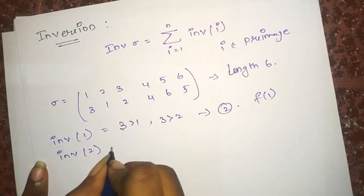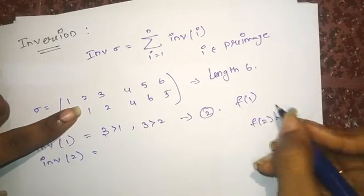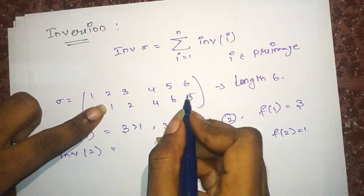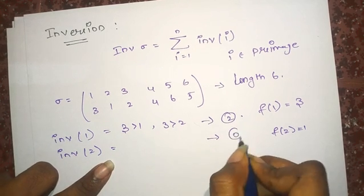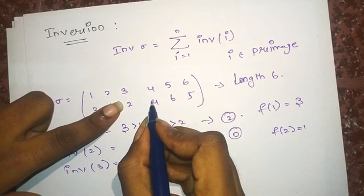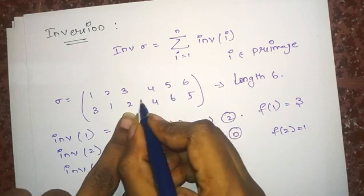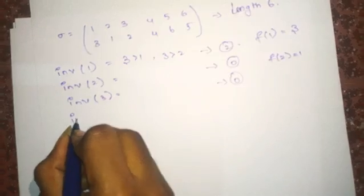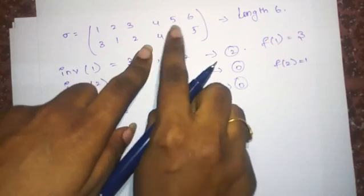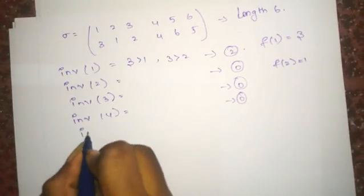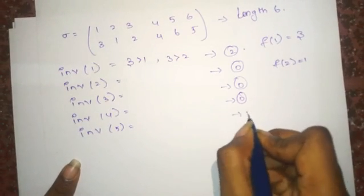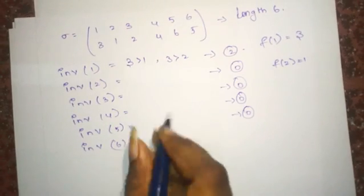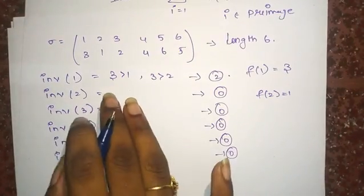For inversion of 2: f(2) = 1. 1 is not greater than 2, not greater than 4, not greater than 6, not greater than 5 — so it is 0. Similarly, inversion of 3: f(3) = 2. 2 is not greater than 4, not greater than 6, not greater than 5 — so it is 0. Inversion of 4: f(4) = 4. 4 is not greater than 6, not greater than 5 — it is also 0. Inversion of 5 is 0. Inversion of the last digit is always 0.